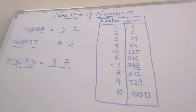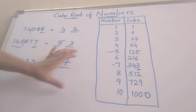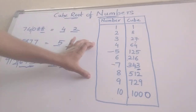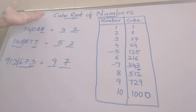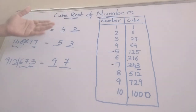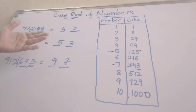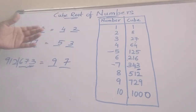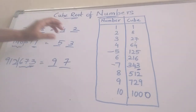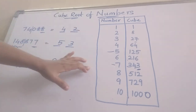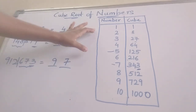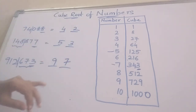By using this table, we are finding the cube root of a number in less than 5 seconds. For this, we all need to thoroughly practice the cubes from 1 to 10. Thank you.